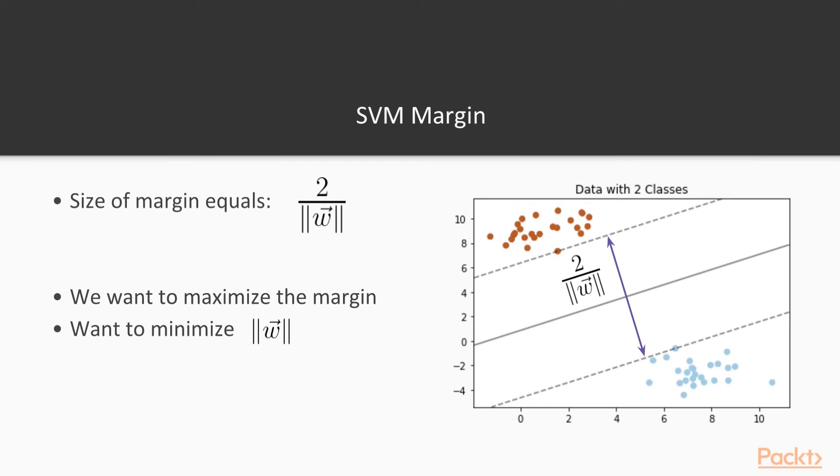And we want to maximize this margin, right? We want to find the line that cuts right through the middle and has the largest margin between these two support vectors on each side. In order to maximize this margin, we want to minimize the magnitude of the vector w. And this defines one of our objectives that we want to use in our loss function when we are learning a proper SVM to separate these two classes.